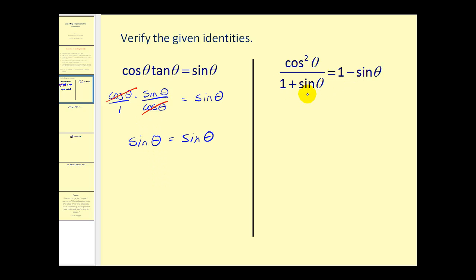On this second identity, we may think to multiply this by the conjugate, by multiplying the numerator and denominator by one minus sine theta. However, a lot of times when you have a trig function squared, we want to use one of those Pythagorean identities. And we know that sine squared theta plus cosine squared theta equals one. So if we solve that identity for cosine squared theta, we could replace this with one minus sine squared theta.